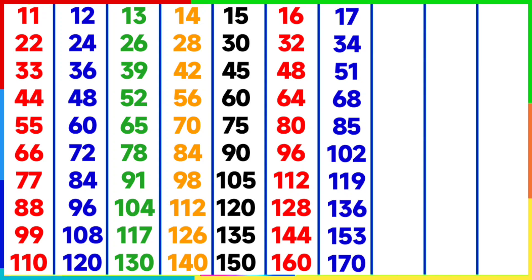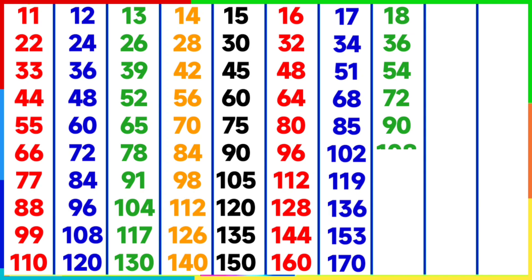Table of 18: 18 ones are 18, 18 twos are 36, 18 threes are 54, 18 fours are 72, 18 fives are 90, 18 sixes are 108.